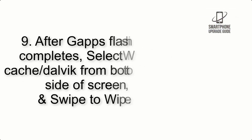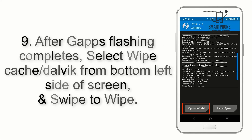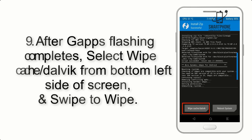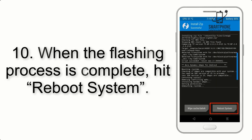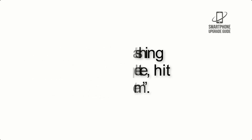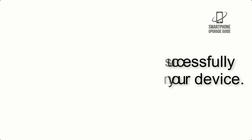Step 9: After GApps flashing completes, select Wipe Cache and Dalvik from the bottom left side of the screen, and swipe to wipe. Step 10: When the flashing process is complete, hit Reboot System. That's it — you have successfully installed the ROM on your device.